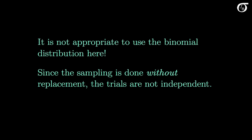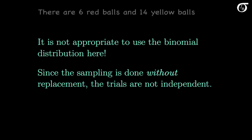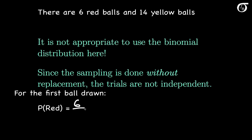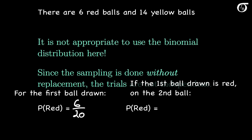It's not appropriate to use the binomial distribution here. Since the sampling is done without replacement, the trials are not independent. The probability of getting a red ball will change from trial to trial depending on what happened in other draws. For example, on the first draw, since there are 6 red balls and 14 yellow, the probability of getting a red ball is 6 out of 20, or 0.3. But suppose the first draw is a red ball — then on the second draw the probability of getting a red ball is now only 5 out of 19. The probability of success on any individual trial depends on what has happened on the other trials.